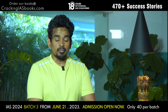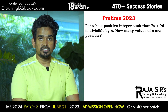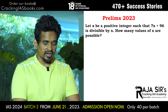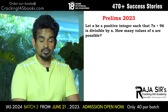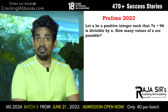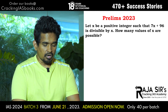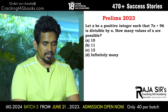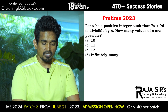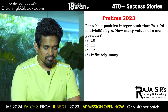Problem number one: Let X be a positive integer such that 7X plus 96 is divisible by X. How many values of X are possible? Option A: 10. Option B: 11. Option C: 12. Option D: infinitely many.